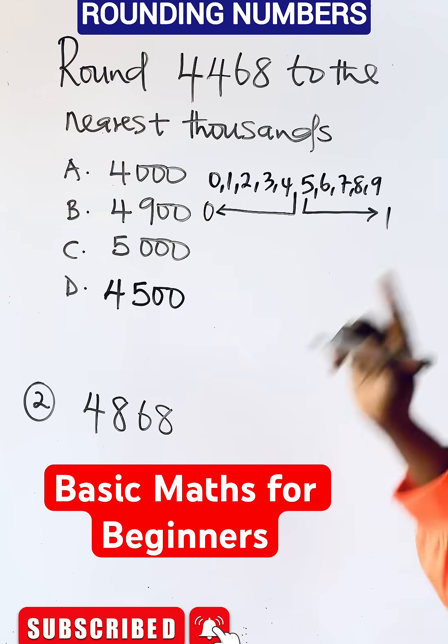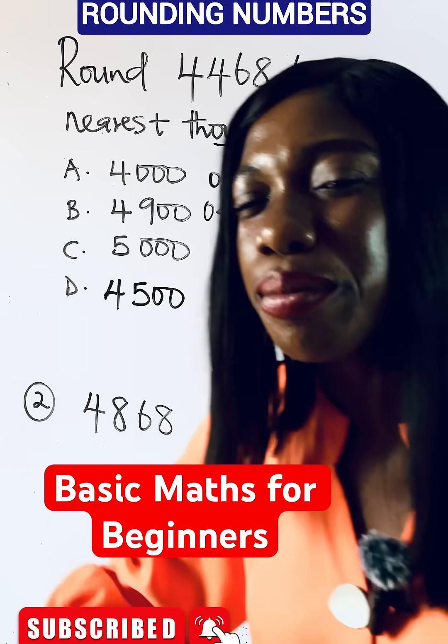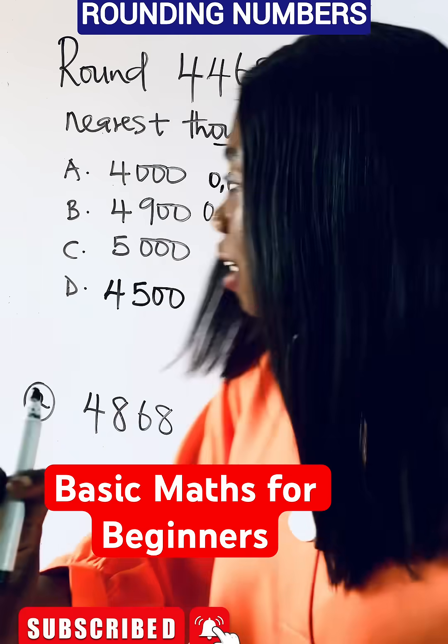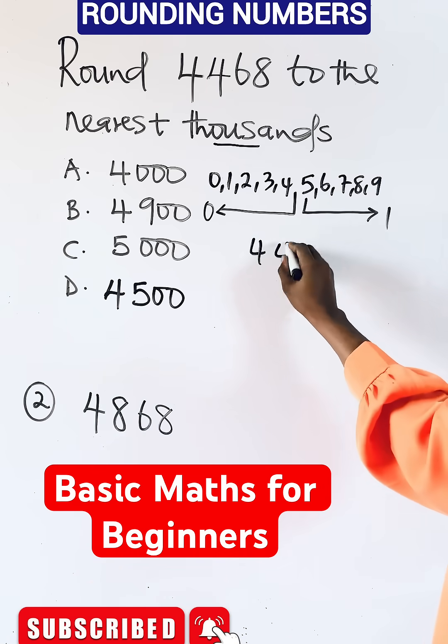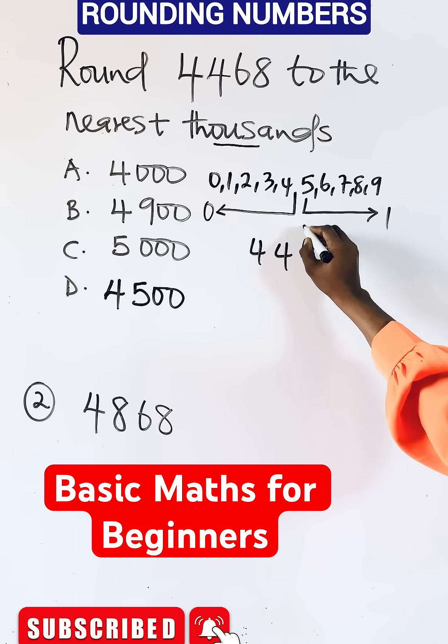Now for you to round to the nearest thousands, you start it from the hundreds. Now what do you do? This is what you have. So in placing values on it: this is units, this is your tens, this is hundreds, this is thousands.